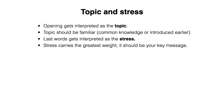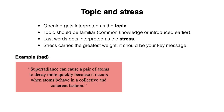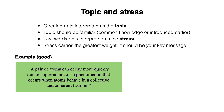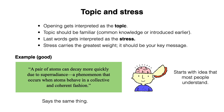So let's look at an example. "Superradiance can cause a pair of atoms to decay more quickly, because it occurs when atoms behave in a collective and coherent fashion." So what's the problem here? Well, it's that most people don't know what superradiance is, which makes it challenging for a reader who doesn't know. So we can fix this as follows: "A pair of atoms can decay more quickly due to superradiance, a phenomenon that occurs when atoms behave in a collective and coherent fashion." This says the same thing, but it starts with an idea that most people can understand: a pair of atoms.